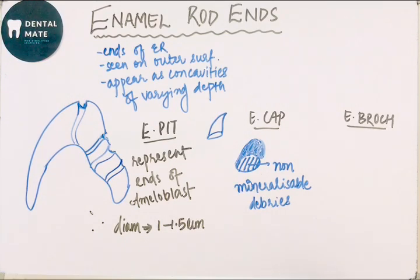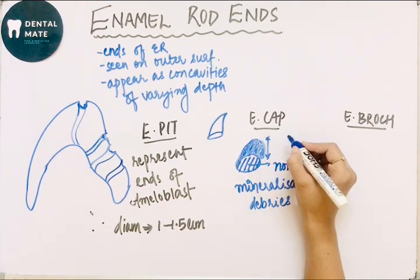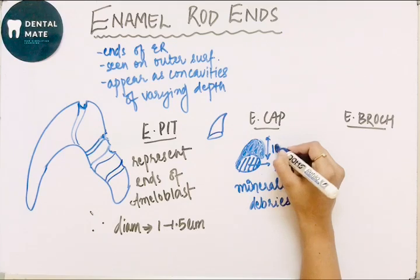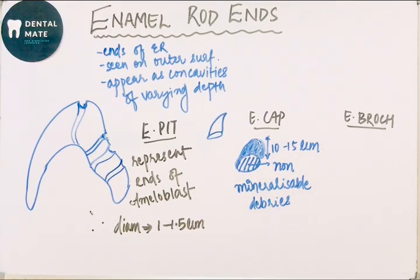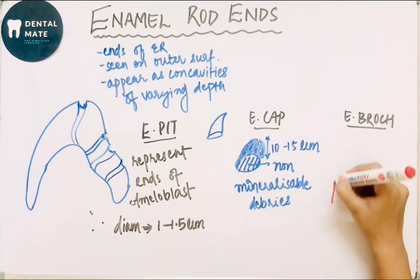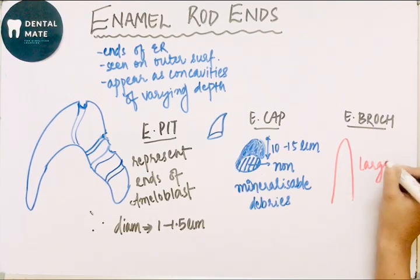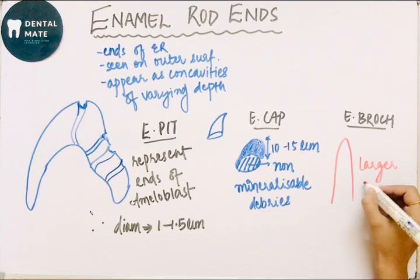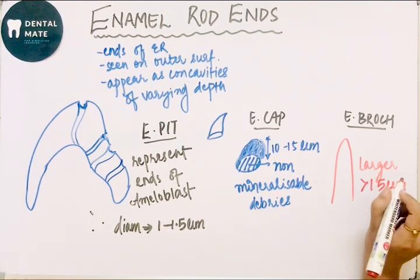Next is enamel brooch. What is enamel brooch? It is larger enamel elevations. The dimension of this elevation is 10 to 15 micrometers.